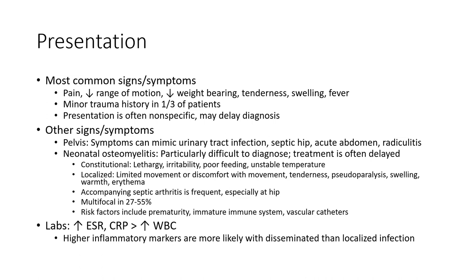In children, infections such as septic hip and abdominal radiculitis present differently. Neonatal osteomyelitis is particularly difficult to diagnose and treatment is often delayed. Relative irritability, poor feeding, and unstable temperature are key signs. Local limited movement or discomfort with movement, tenderness, pseudoparalysis, swelling, and erythema may be seen, often accompanied by septic arthritis.